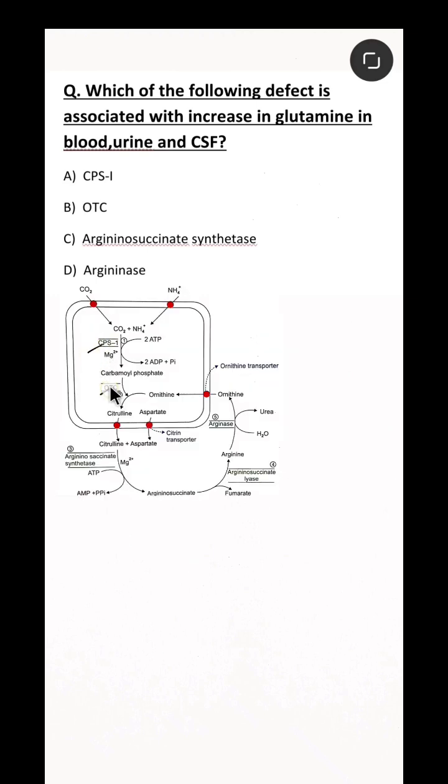Here you can see that all are urea cycle enzymes. Deficiency of any of the urea cycle enzyme would result in hyperammonemia.